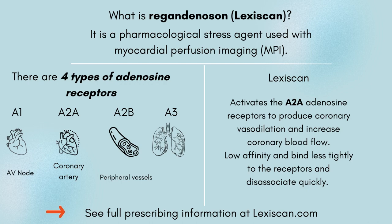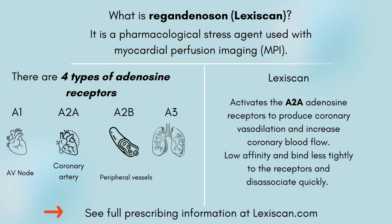Some points to remember about preparing a patient for a regadenosin nuclear stress test. First, regadenosin is a pharmacologic stress agent indicated for myocardial perfusion imaging, also known as MPI. Regadenosin primarily activates the adenosine A2A receptor located in the coronary arteries and causes increased coronary blood flow. The half-life is two to four minutes due to its low affinity to the receptors, so it rushes in quickly but symptoms resolve after a few minutes.